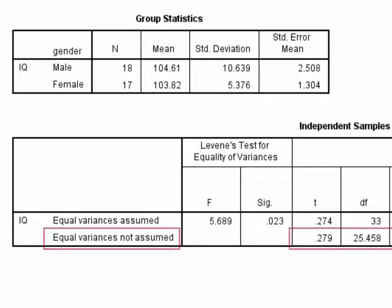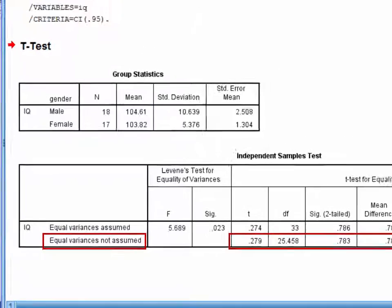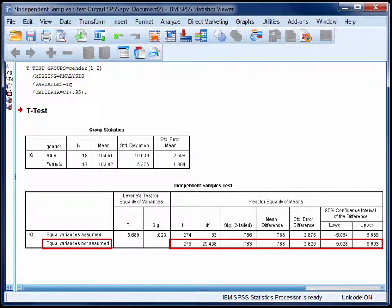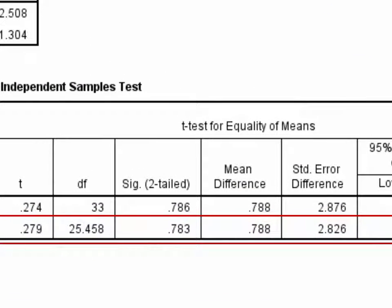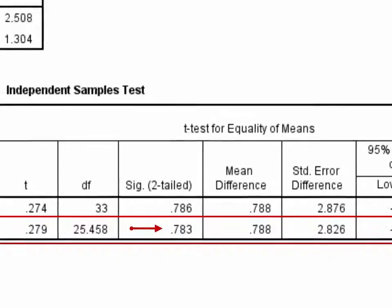Consequently, we need to report and interpret the t-test for equal variances not assumed, which is also called Welch's t-test. The null hypothesis for this test is that the two group means are the same. As the test is not significant, because the significance level is greater than 0.05, we are unable to reject the null hypothesis. In other words, the two group means do not differ by more than would be expected by chance.